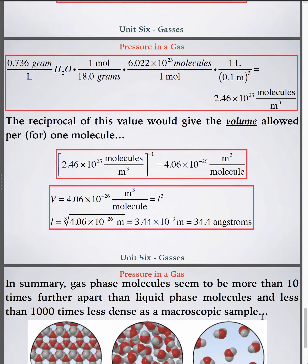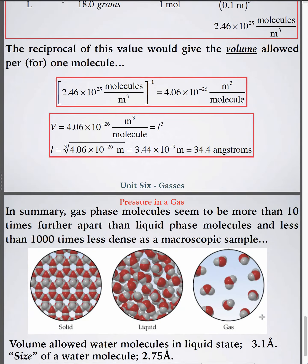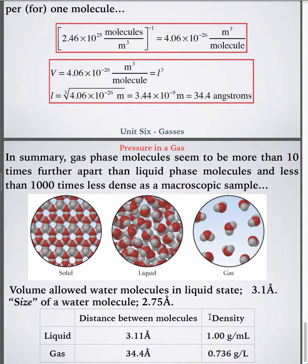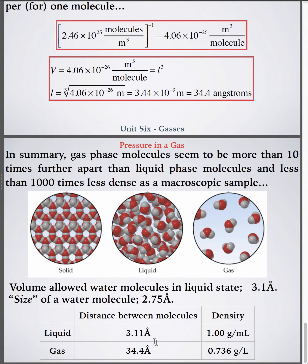So, how does 34 angstroms compare to the size of the water molecule? Remember, the size of the water molecule is 2.75 angstroms. Here's a summary of that. So, with the liquid, I found them to be very closely packed, distance between molecules. I found that from my density of water and Avogadro's number, basically.